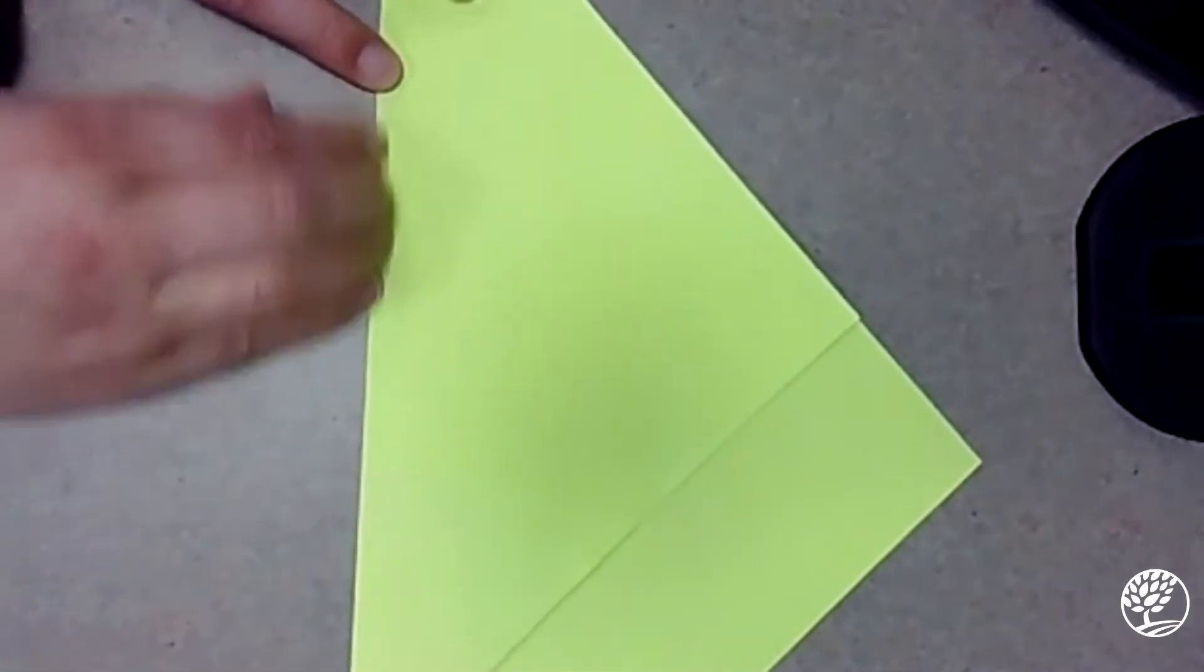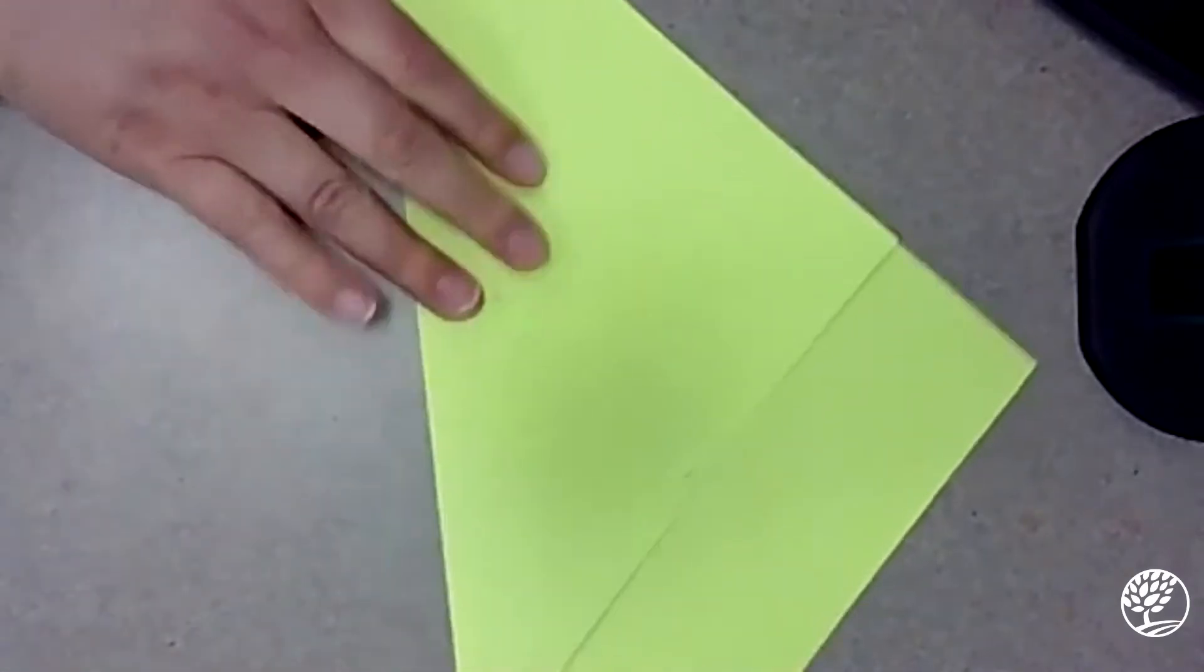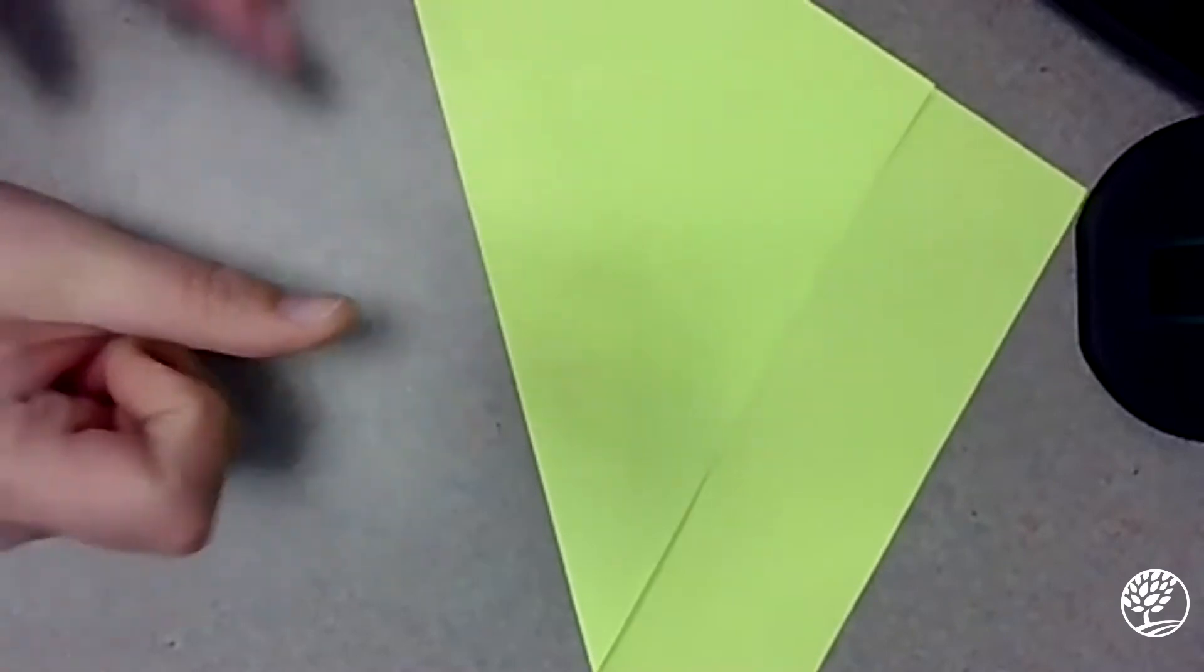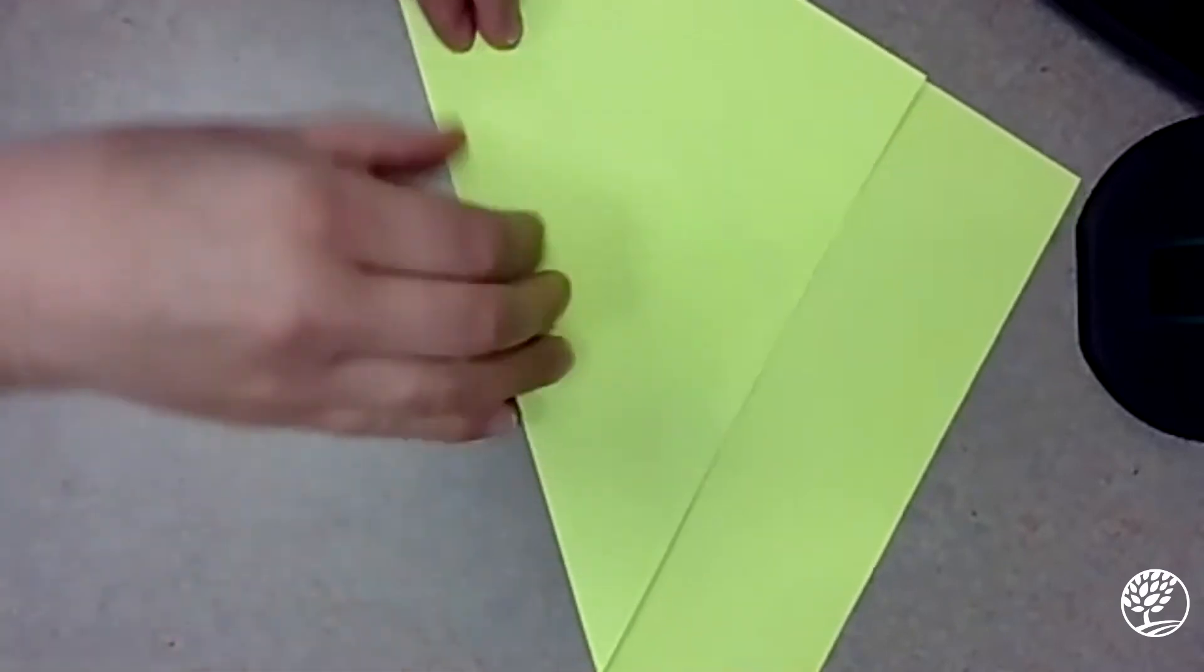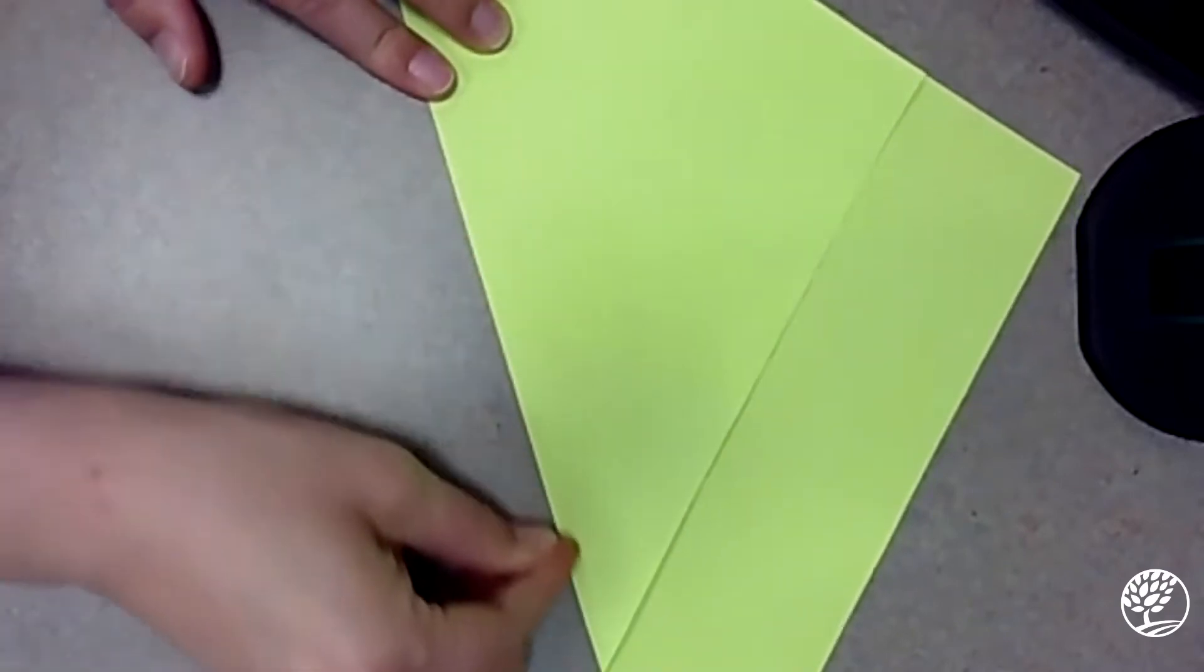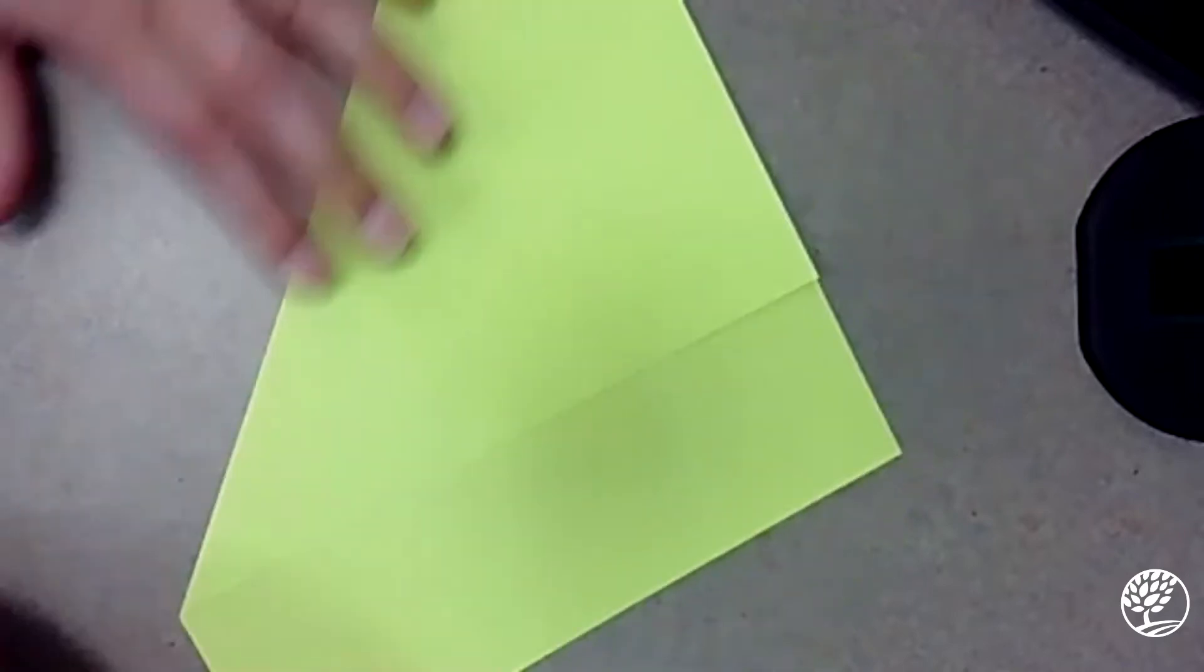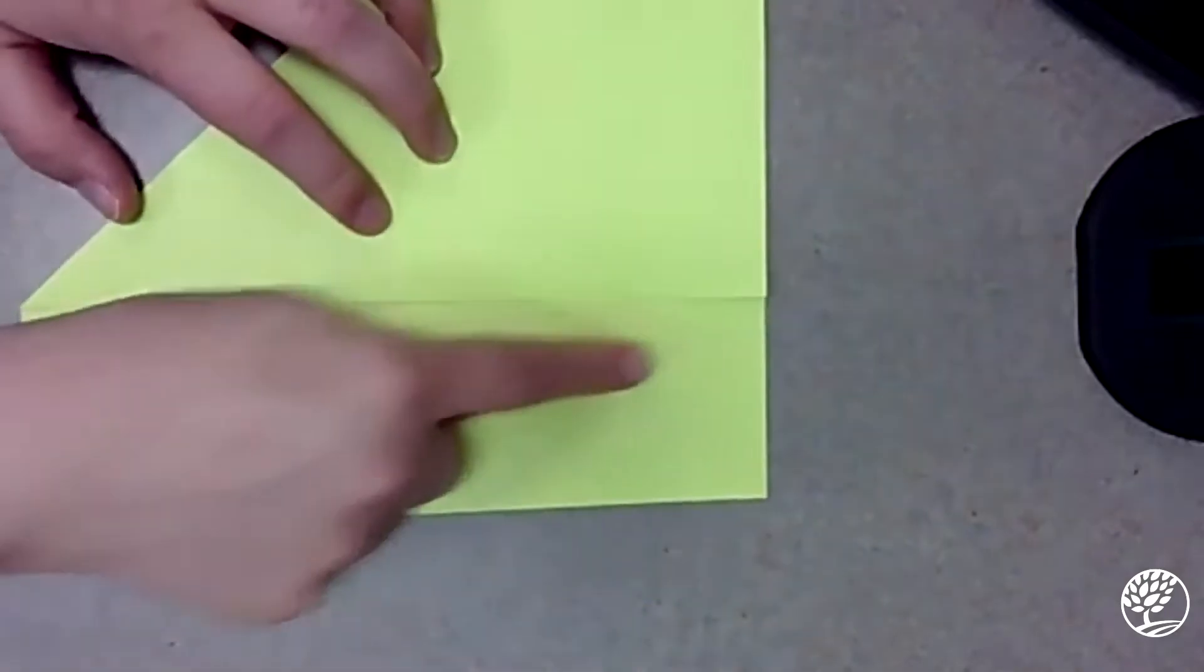And I fold it there with a nice heavy crease. I like to take the edge of my nail and press down when I'm doing origami to get these really good folds. And now I don't need this leftover bit here, so I'm just going to cut it off.